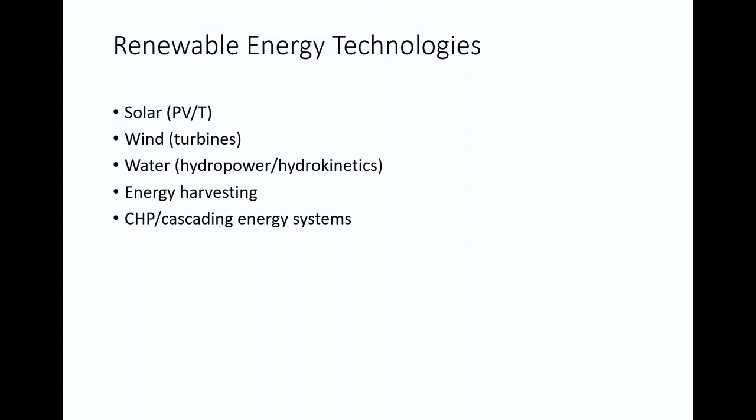What we want to do is move beyond these traditional ways of generating so-called renewable energy and try to take advantage of the environmental diversity around us to match our power generation with the resources we have on hand without imposing our will on the environment. In terms of the general list of renewable energy technologies, the top three are solar, wind, and water. But there are other means as well: energy harvesting, combined heat and power, and cascading energy systems — trying to get as much out of our resources as possible without wasting anything.